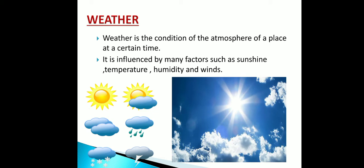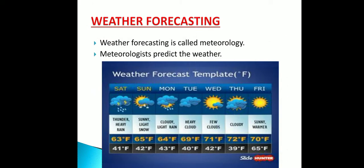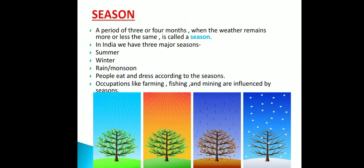Weather is the condition of the atmosphere of a place at a certain time. It is influenced by many factors such as sunshine, temperature, humidity, and winds. Weather forecasting is called meteorology. A season is a period of three or four months when the weather remains more or less the same. In India we have three major seasons: summer, winter, and rain or monsoon. People eat and dress according to the seasons, and occupations like farming, fishing, and mining are influenced by seasons.